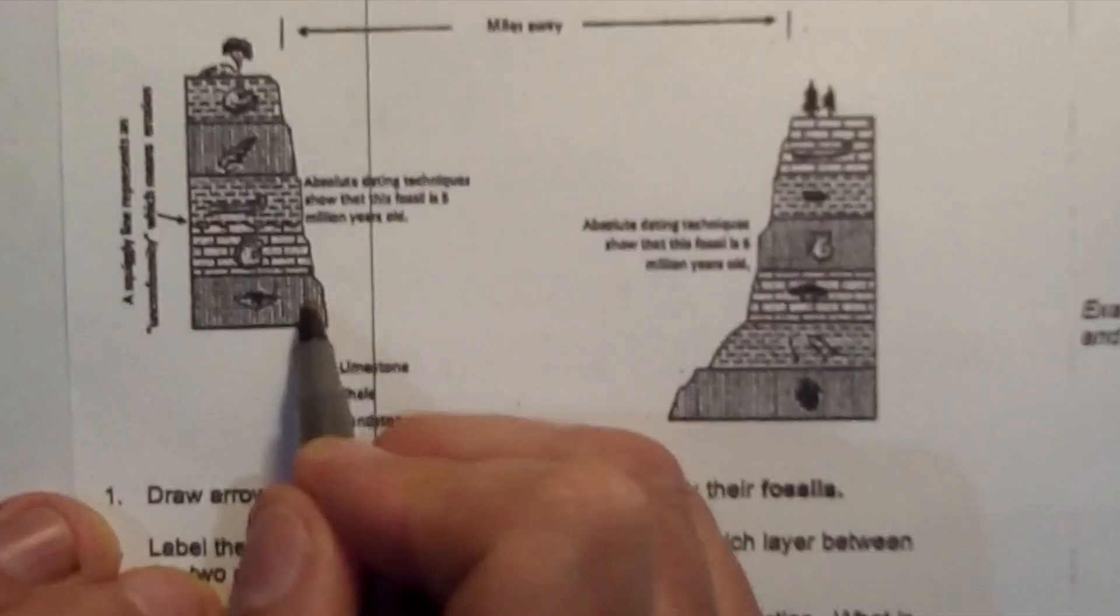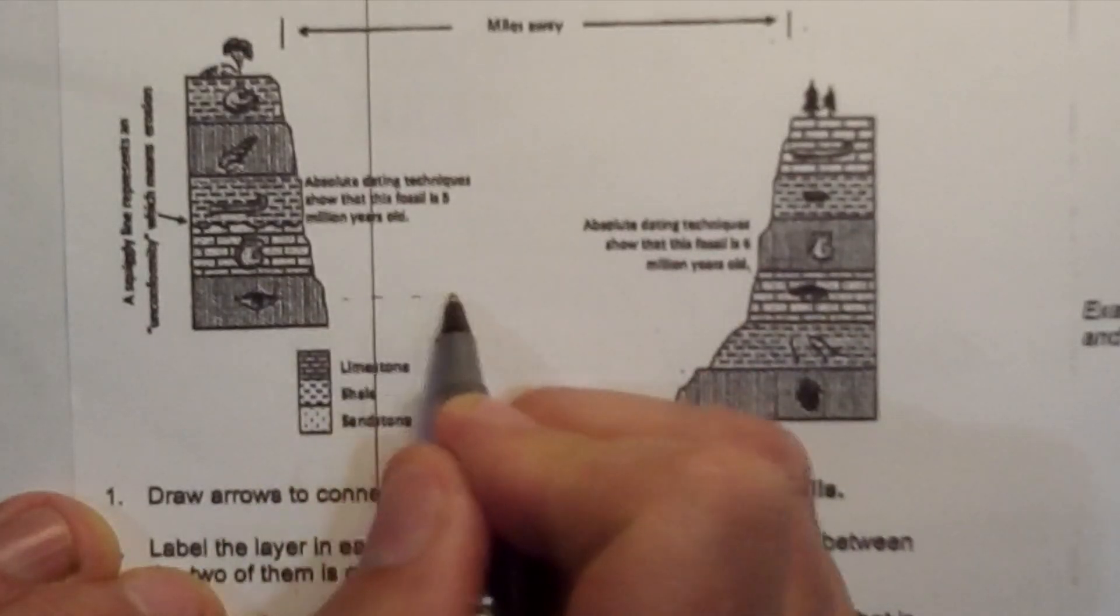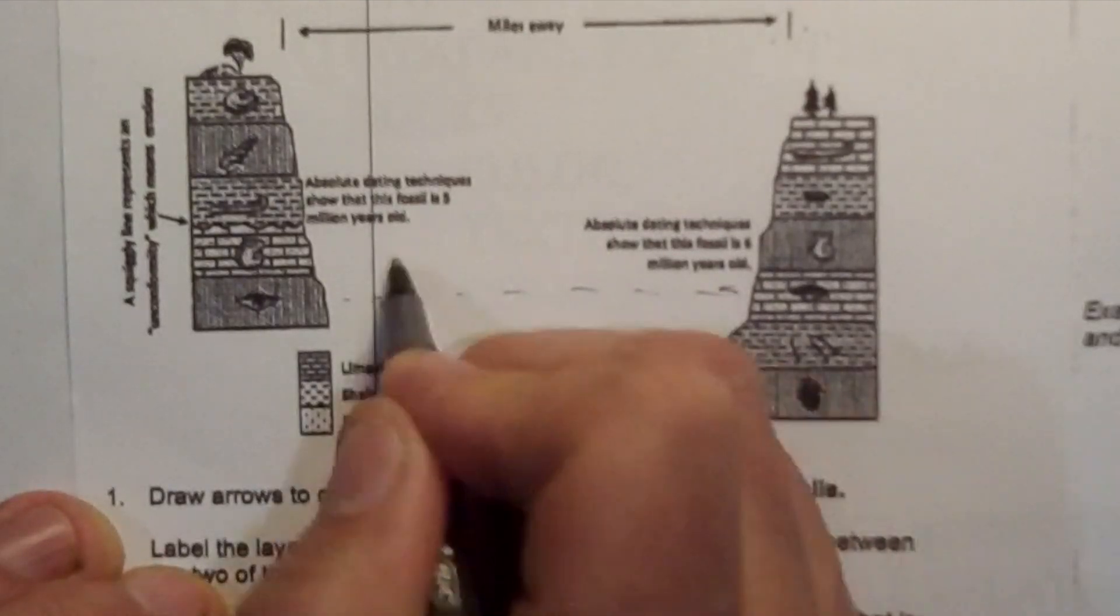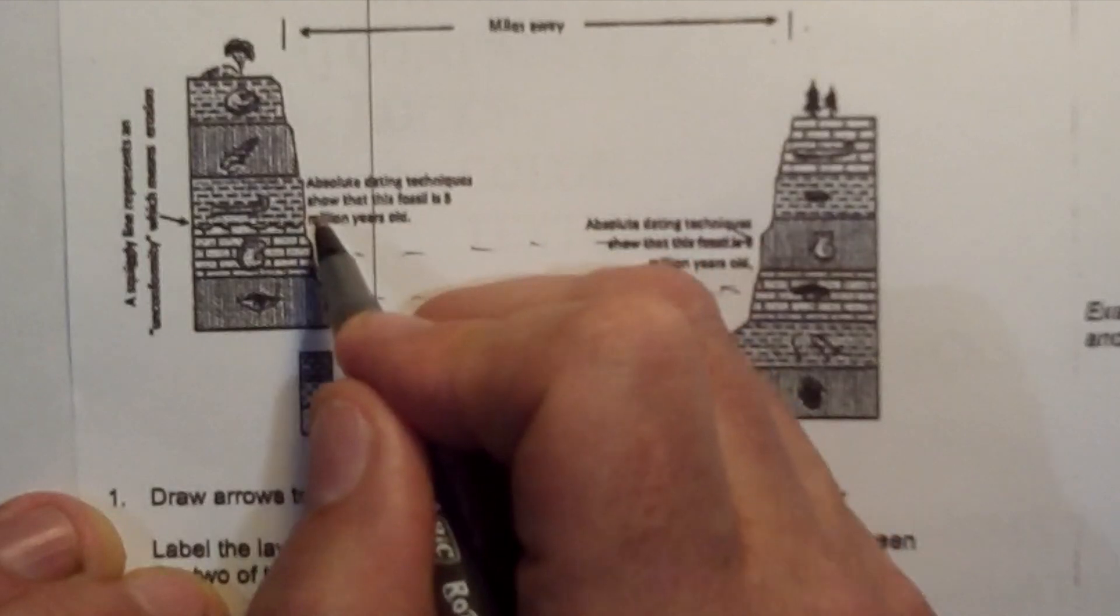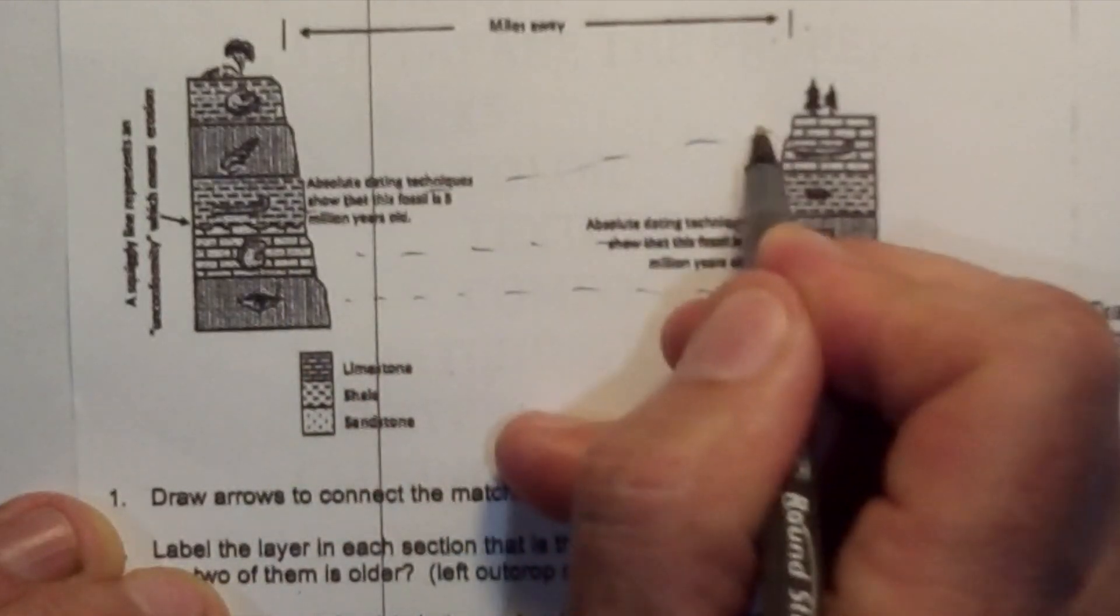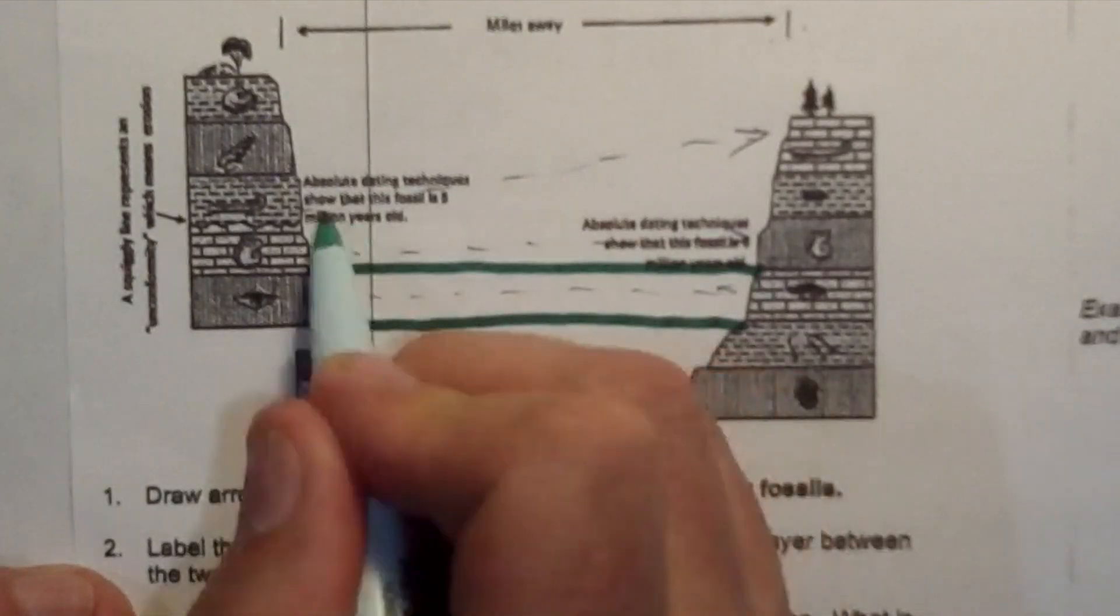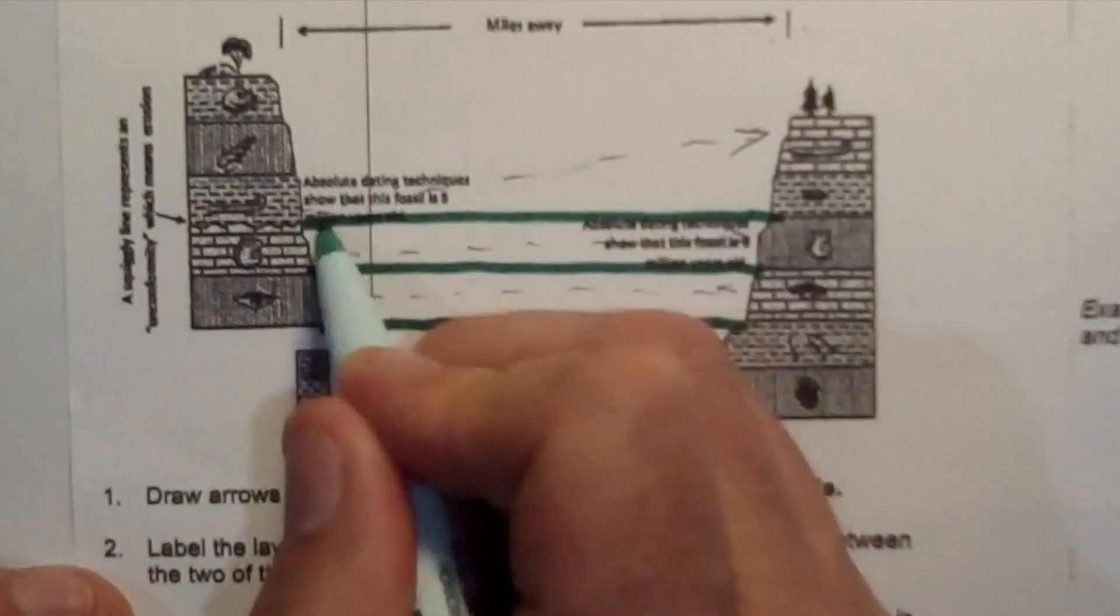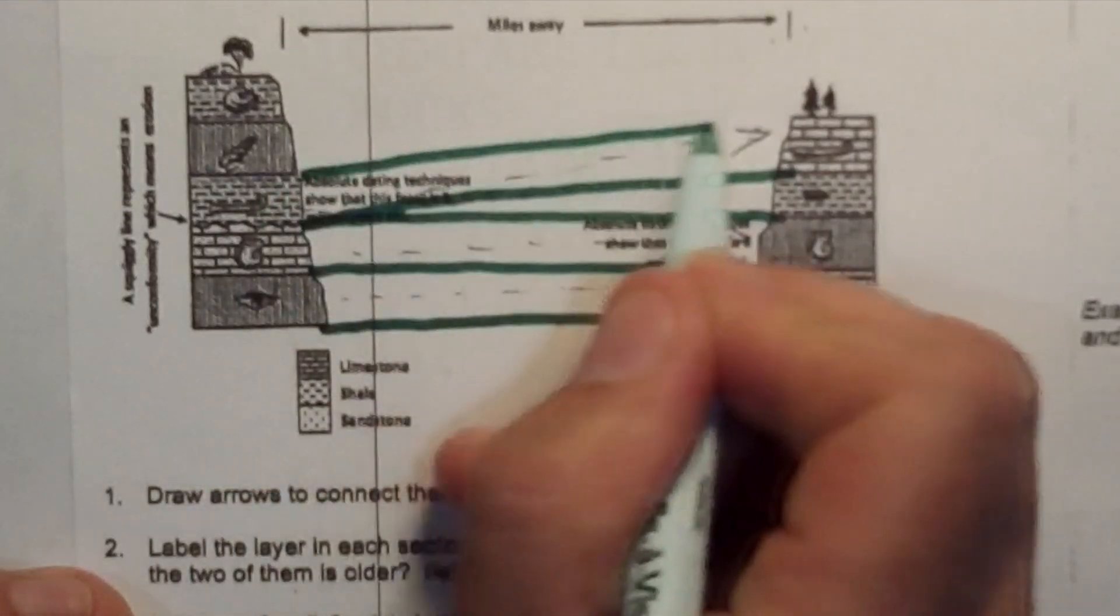Looking at this, I see that these two layers match up with each other. So I'll just draw an arrow across here. These two match up with each other, and these two layers match up with each other. Even though they're not the same type of rock, these two are the same age. These two are the same age, and these two are the same age.